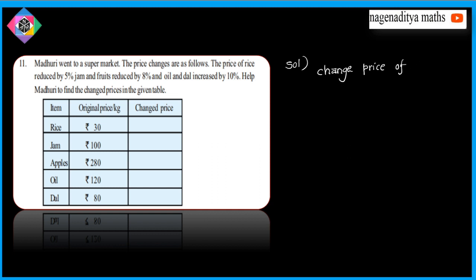Changed price of rice. Rice means reduce — the price of rice is reduced by 5%. Changed price of rice is equal to: original price minus 5 rupees. So 100 minus 5 rupees is equal to 95 rupees.